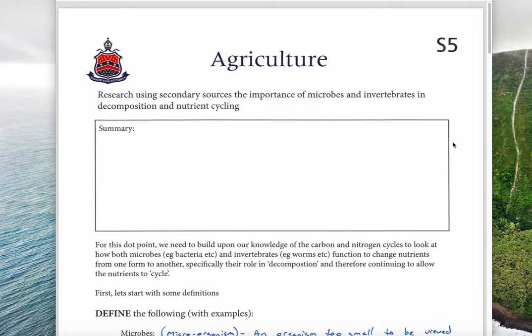Welcome to dot point S5, researching the importance of microbes and invertebrates in decomposition and nutrient cycling. This is related to the last couple of dot points, particularly S4 about nitrogen and carbon cycles.